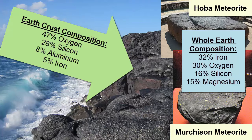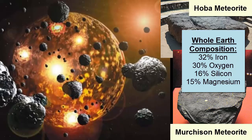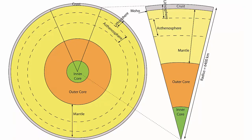But that composition is very different from what we see on Earth's surface, which is 47% oxygen, 28% silicon, 8% aluminum, and only 5% iron. Why? Early Earth formed through meteorite accretion would have been homogeneous, yet present Earth has layers. Where did these layers come from?